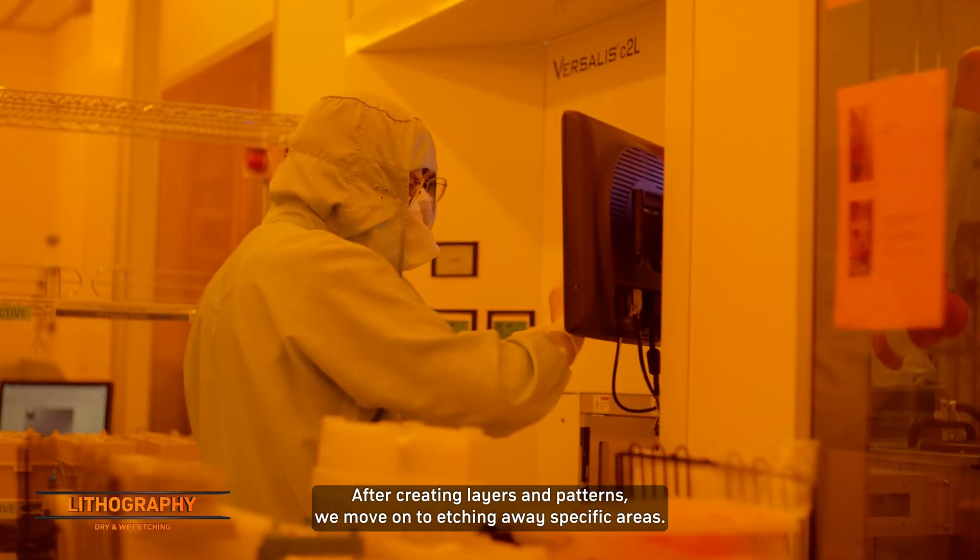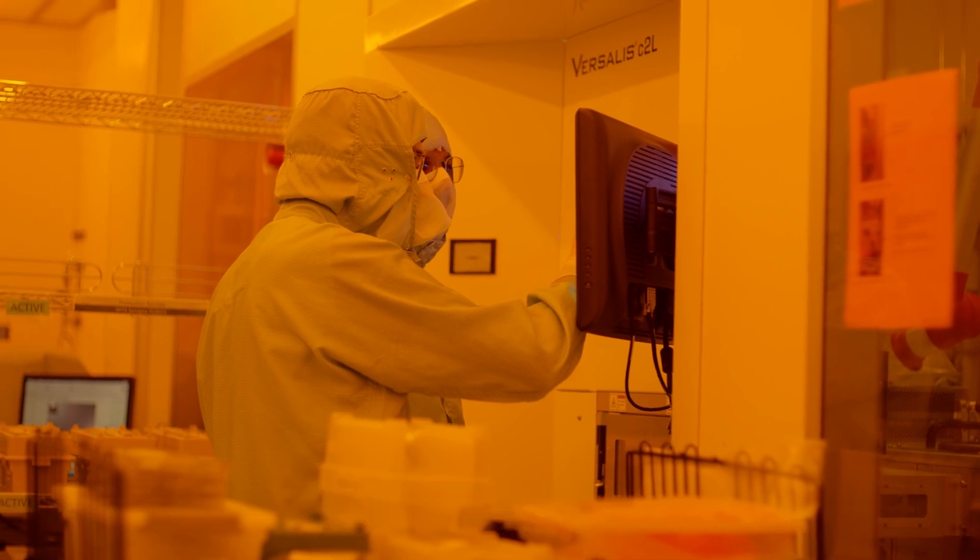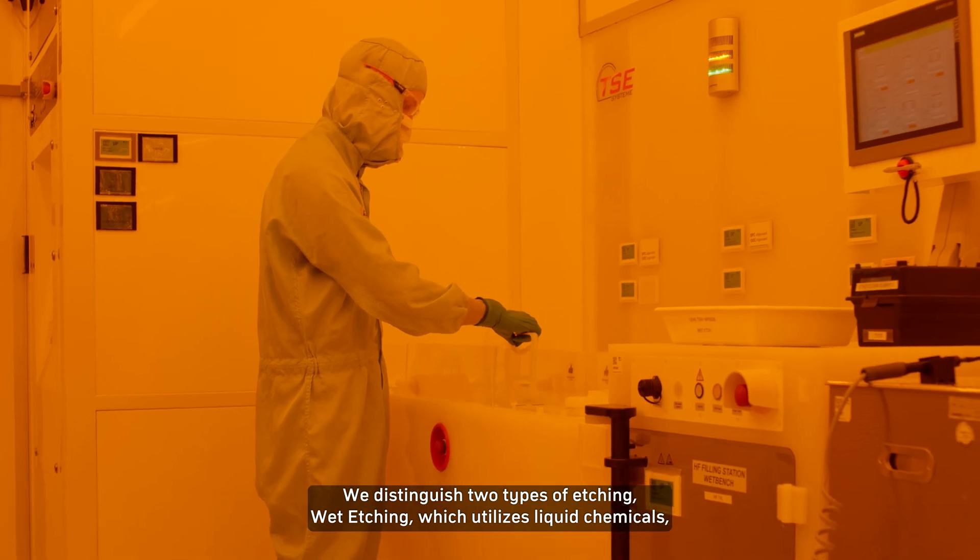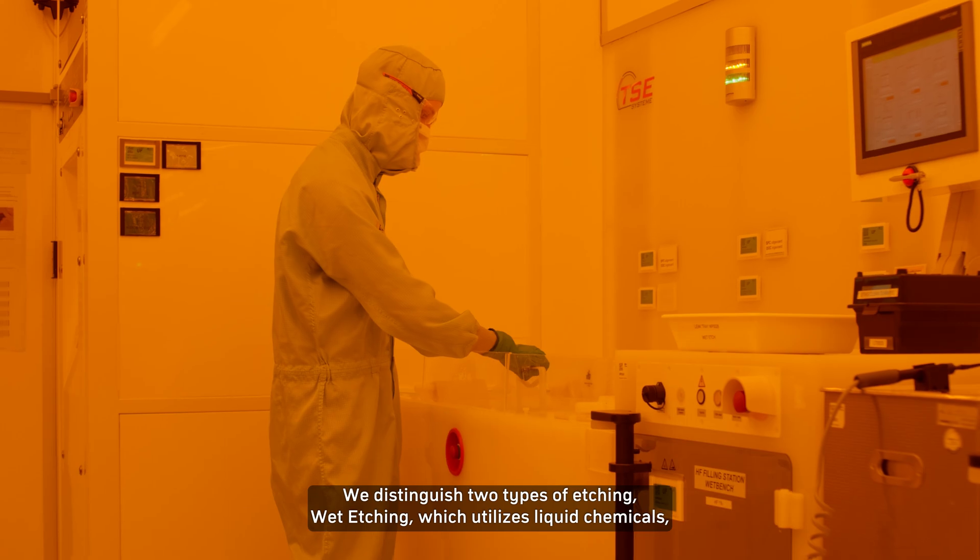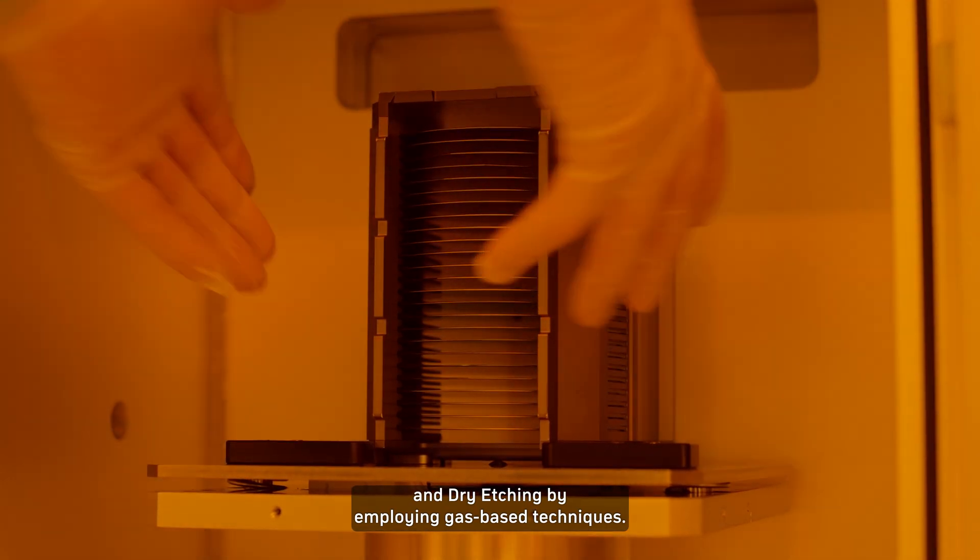After creating layers and patterns, we move on to etching away specific areas. We distinguish two types of etching: wet etching, which utilizes liquid chemicals, and dry etching, by employing gas-based techniques.